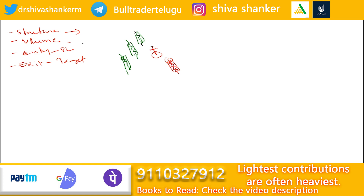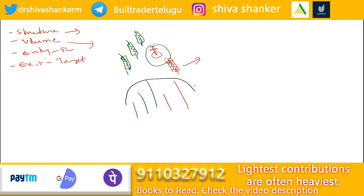In the beginning of the uptrend, we observe the volume. When the Doji star appears, we maintain an average volume. Then, when the bearish candle forms, we see more than average volume. The volume follows an inverted U-shaped pattern. This is the volume behavior for the Collapsing Doji Star candlestick pattern.